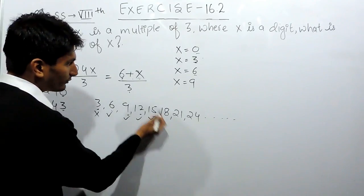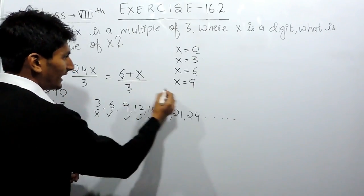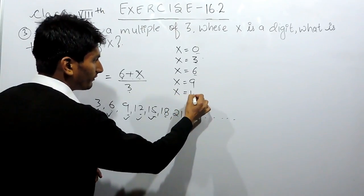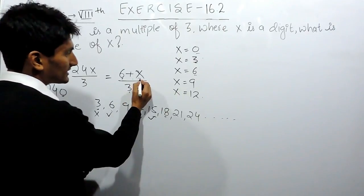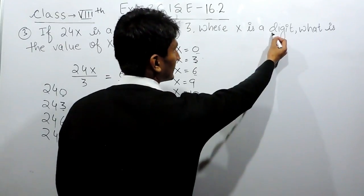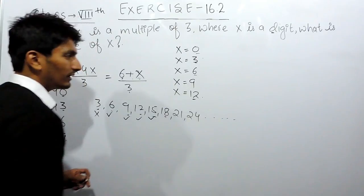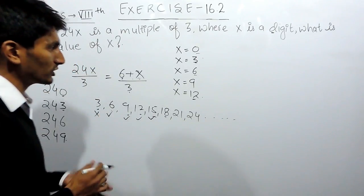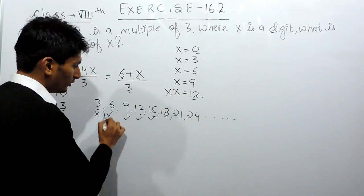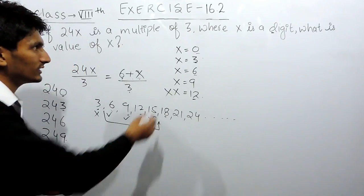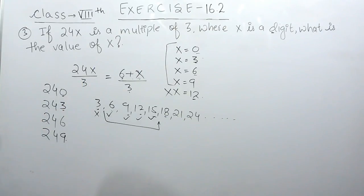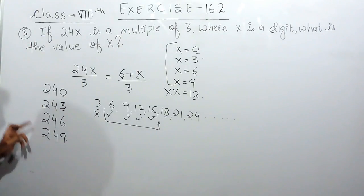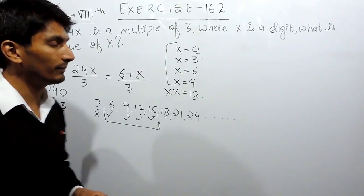Now if I have to make the sum equal to 18, I would need to substitute x as 12, which is not possible because x must be a single digit. So that is not possible. Therefore, these four values — x equals 0, 3, 6, and 9 — are all the cases for which this complete number is divisible by 3, making it a multiple of 3.